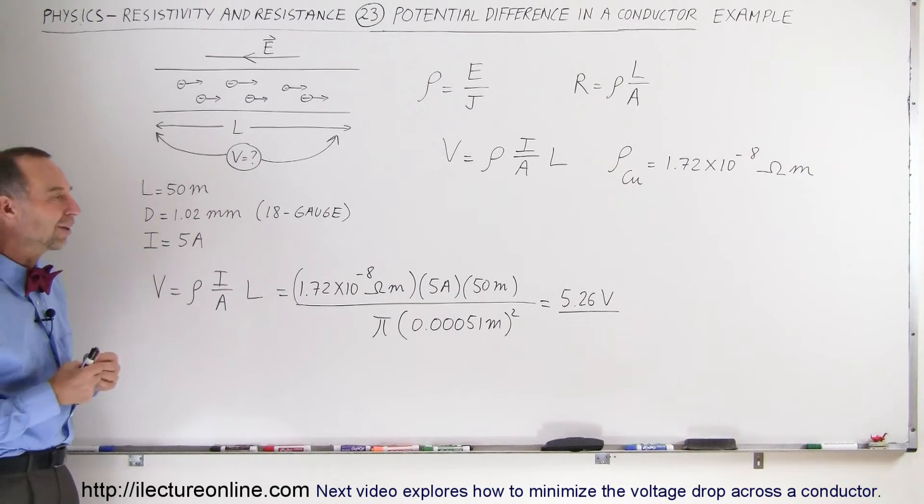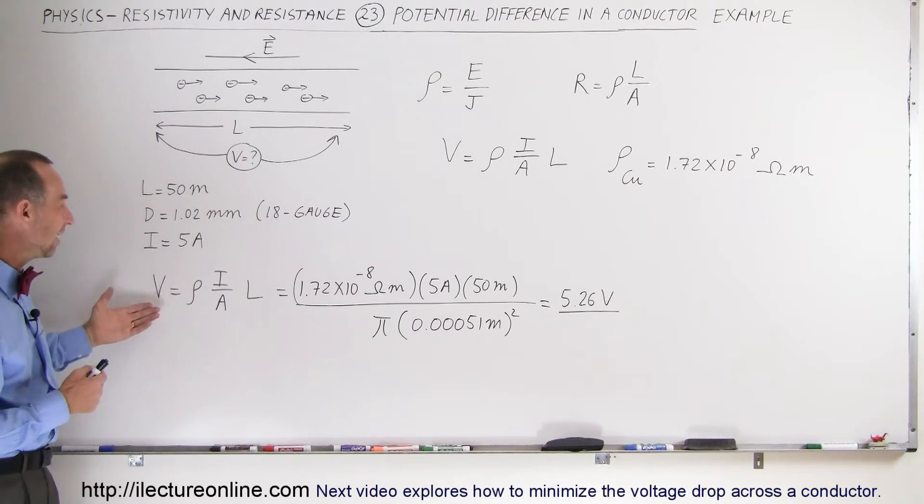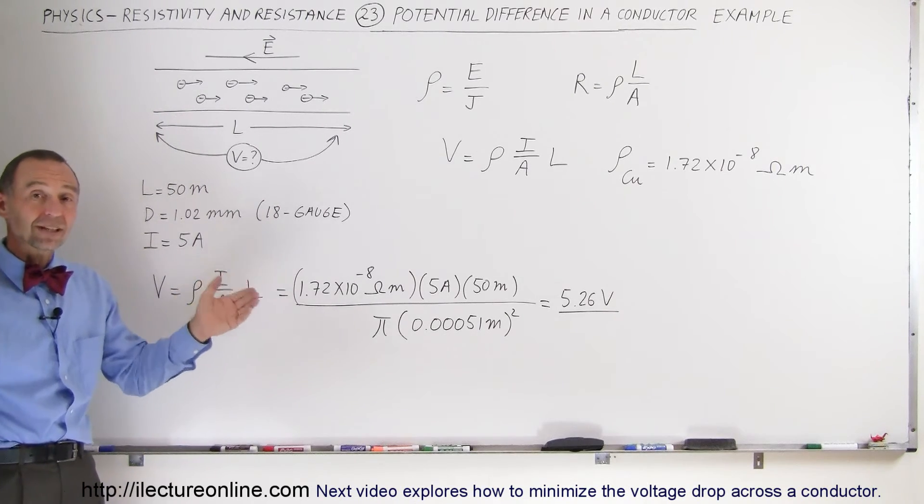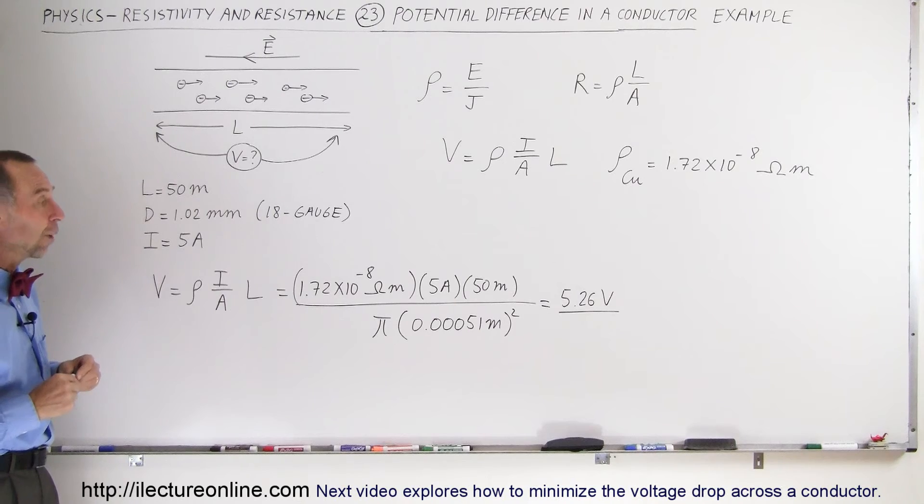So there's a lot to it, a lot to conducting of electricity. And this is kind of an interesting result when you think that a conducting wire can actually have a significant voltage drop across the wire.